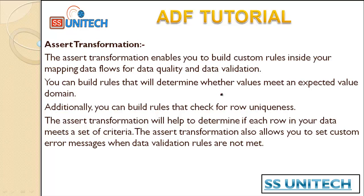For example, if we are getting data from the source, before loading it into the destination we need to check whether the data is correct or not. If data is not correct, we need to load it into some error file or error table inside SQL Server, and the correct data will be loaded into the destination. You can build rules that determine whether values meet an expected value domain, and also rules that check row uniqueness. The Assert transformation also allows you to set a custom error message when data validation rules are not met.